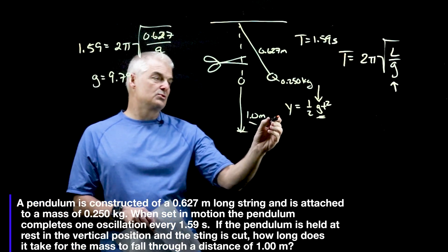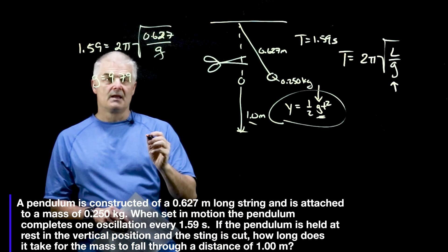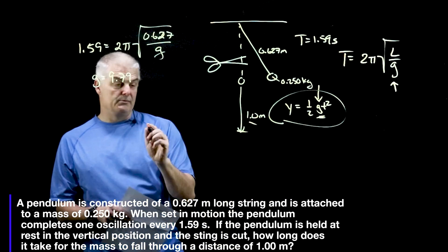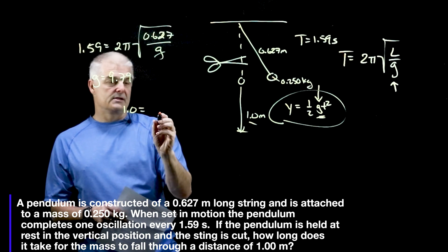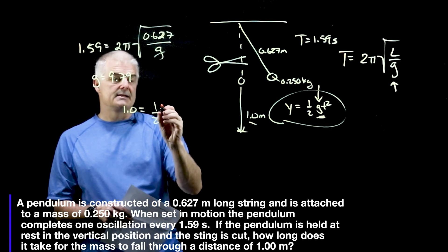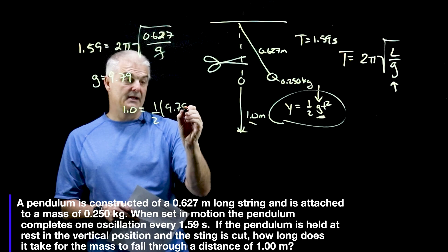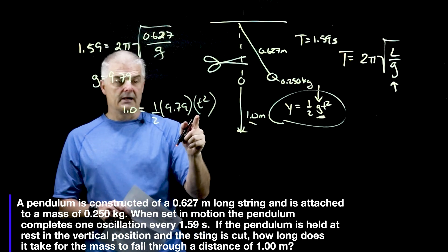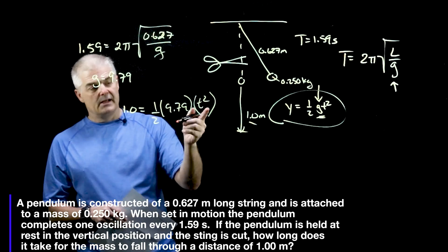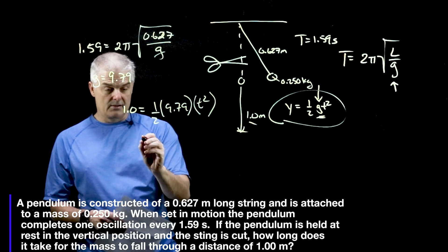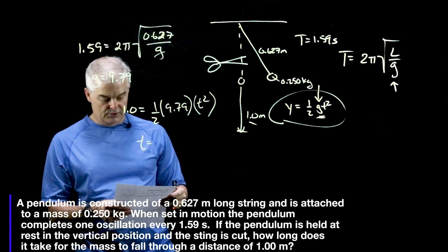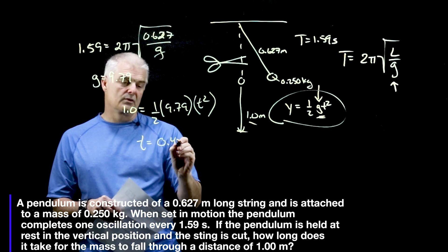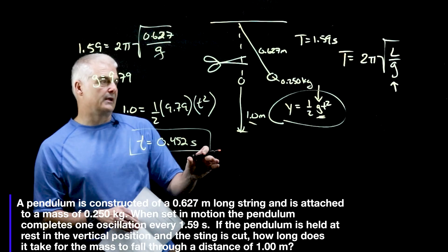Now we're going to plug that into this equation. And we're going to say y dropped 1 meter, so 1 is equal to 1/2 times 9.79 times t squared. Again, do some algebra, and there's a square root because it's t squared, and you come up with t equal to 0.452 seconds. It's a little more complex, but what this is using is this idea that g isn't like 100% consistent all over the earth.